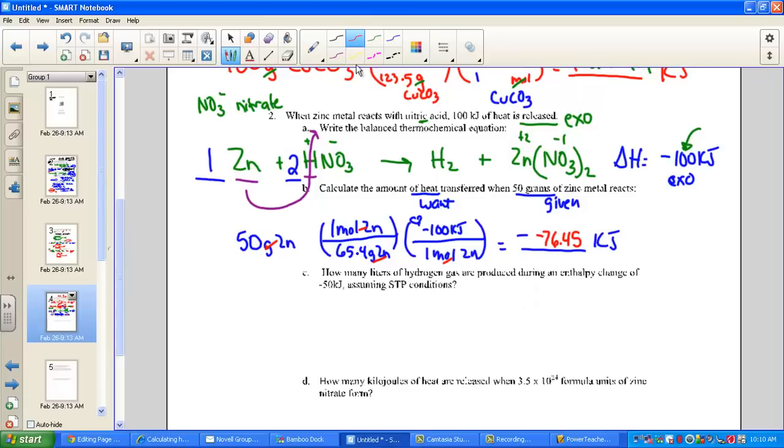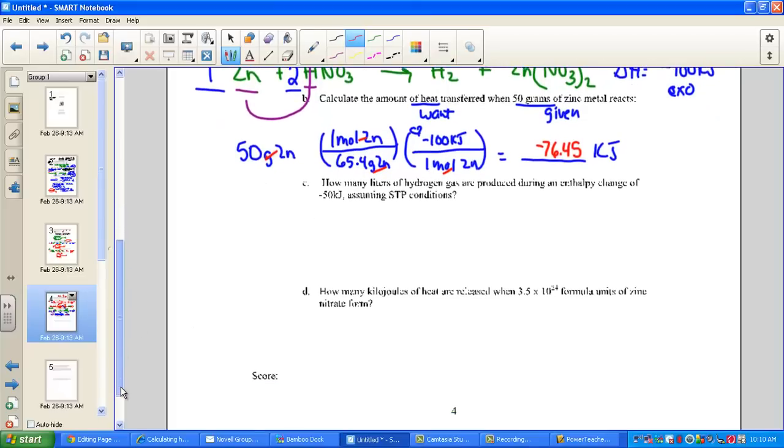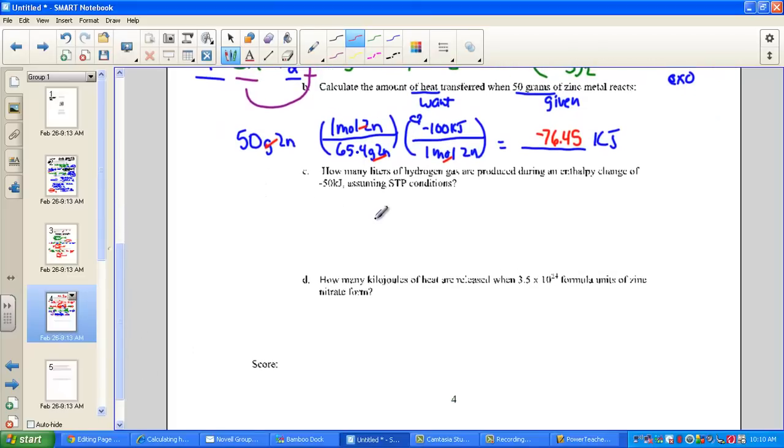Exothermic negative sign. Let's read on. Letter C. How many liters of hydrogen gas are produced? So here's my want. I want liters from an enthalpy change of negative 50 kilojoules. Here's my given. Assuming STP conditions. That's allowing us to use the molar volume unit, 22.4 liters per mole.